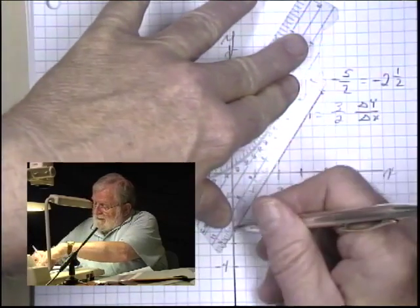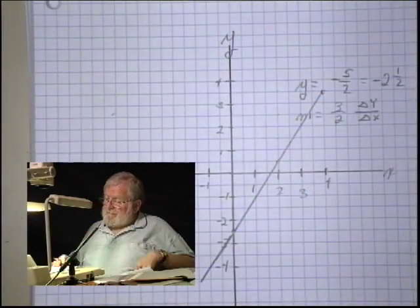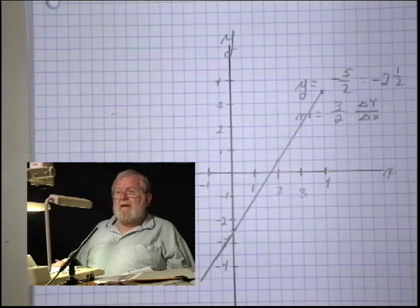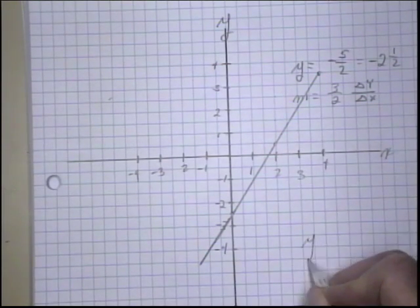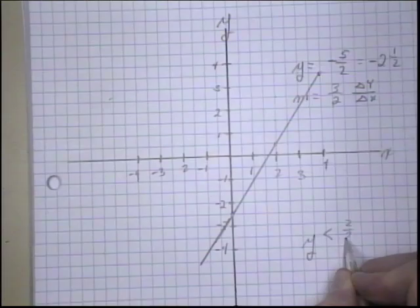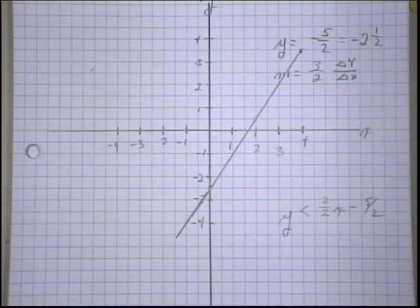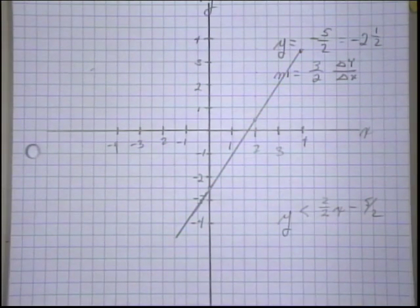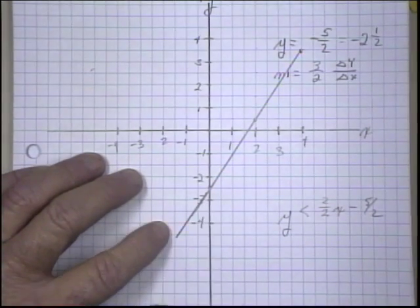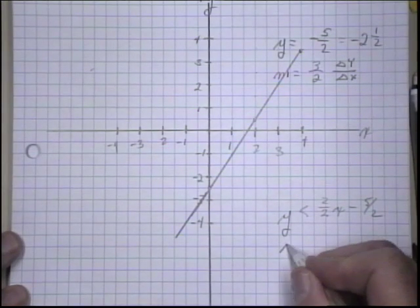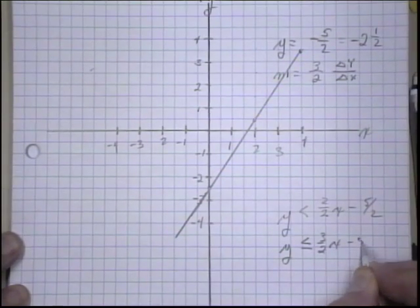And that's the boundary of my inequality. Now, let's go back and look for a second at our inequality. Y is less than 3 halves x minus 5 halves. To be perfectly accurate here, I shouldn't have drawn this as a solid line.